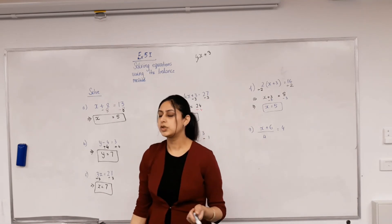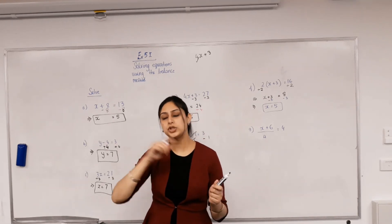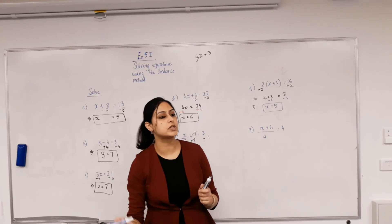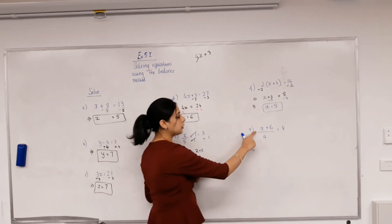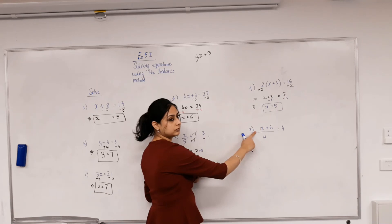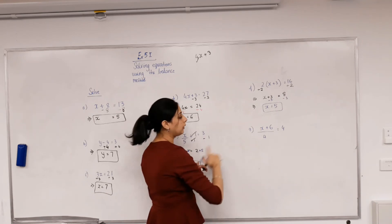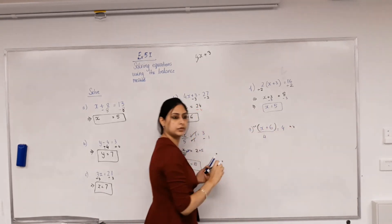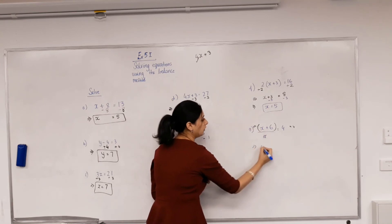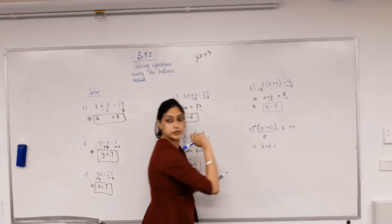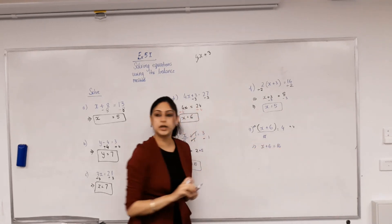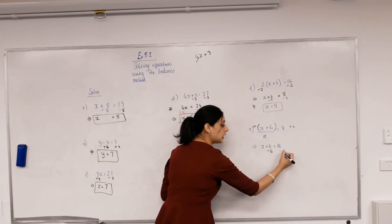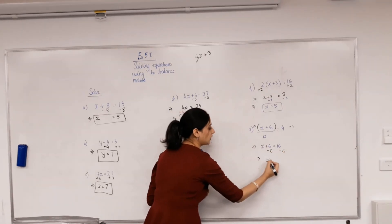If there's more than one operation, identify what order they were carried out and then inverse the last operation first - that's doing inverse operations in reverse order. What was done to x first? Plus 6, and then divided by 4. So to get rid of the 4, multiply both sides by 4. 4 divided by 4 is 1. 4 times 4 is 16. Now get rid of plus 6 by subtracting 6 from both sides. x equals 10.